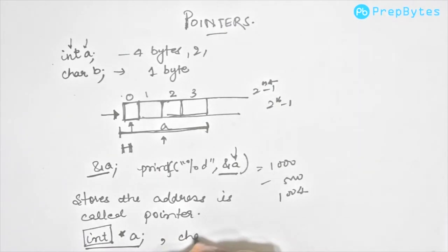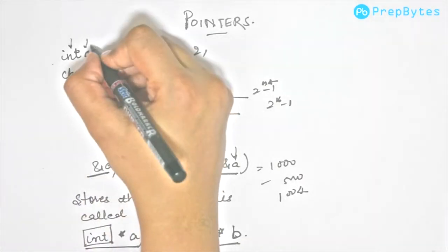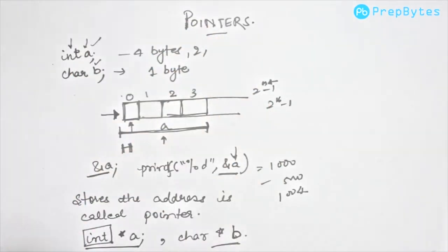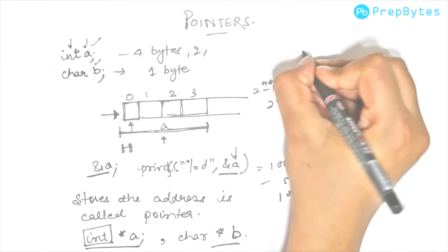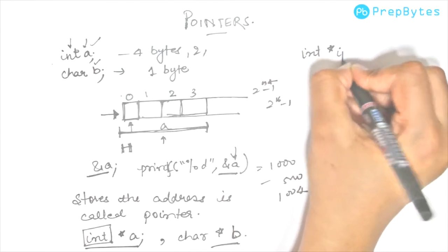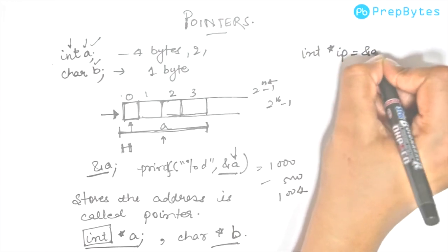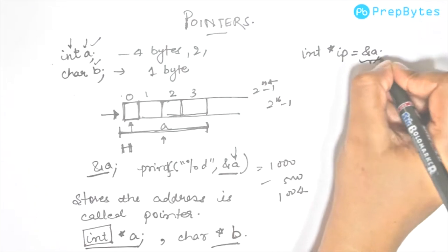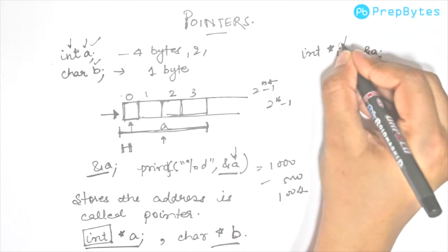Similarly, when we say char *b, this means that b is a pointer that stores address of a character variable. Now say we have a here and b here and we want to store their addresses. If I do int *ip equals &a, the address of a will get stored in integer pointer.